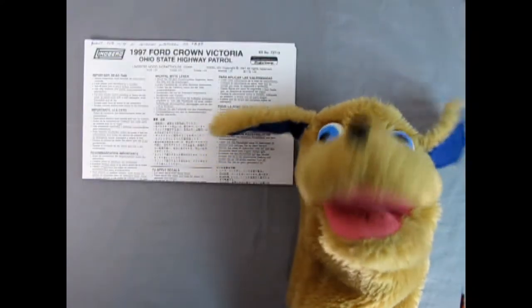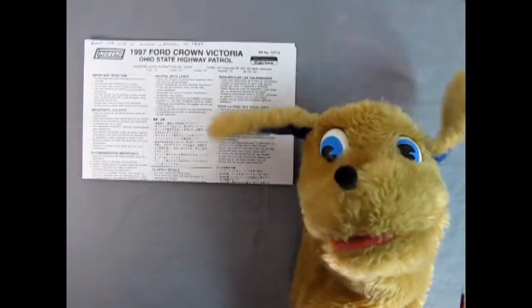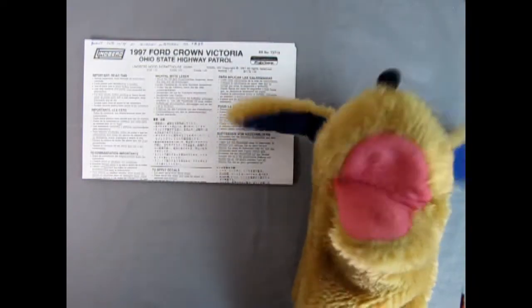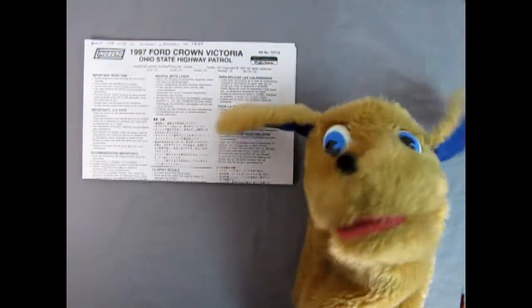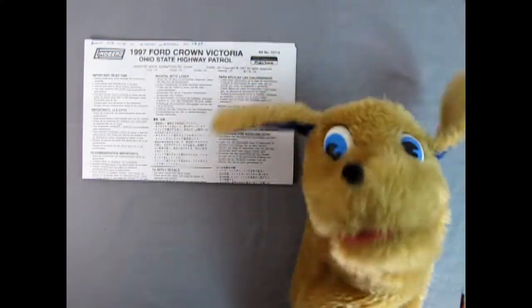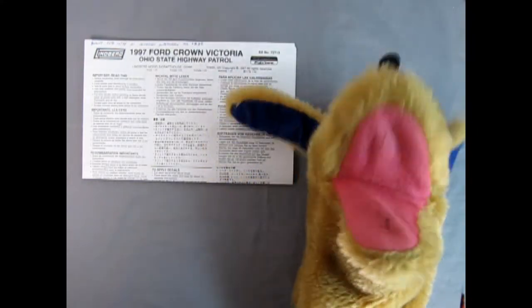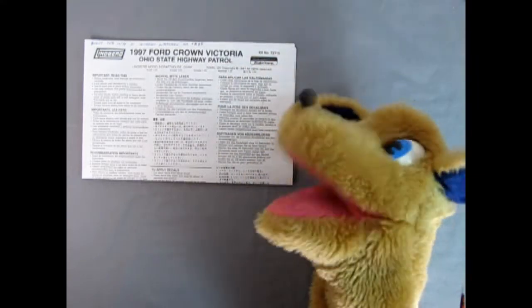Breaker 1-9, Breaker 1-9, this is Danny the dog from the K9 unit and today we're going to be looking at the 1997 Ford Crown Victoria Ohio State Patrol instruction sheet. That was a mouthful! So here it is! Let's take a look!